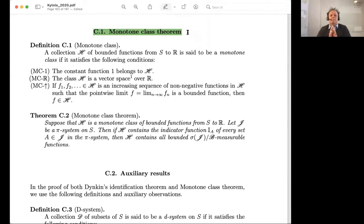Kalle is sketching the proof of the extension result. In the end, a monotone class is a collection of functions—it's a function class which contains the constant function one and is a vector space